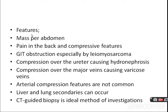What are the features? The patient presents with retroperitoneal mass per abdomen, pain in the back, and compressive features: GIT obstruction especially by leiomyosarcoma, compression over the ureter causing hydronephrosis, compression over major veins causing varicose veins, and arterial compression features which are not common. Liver and lung secondaries can occur. CT-guided biopsy is the ideal method of investigation.